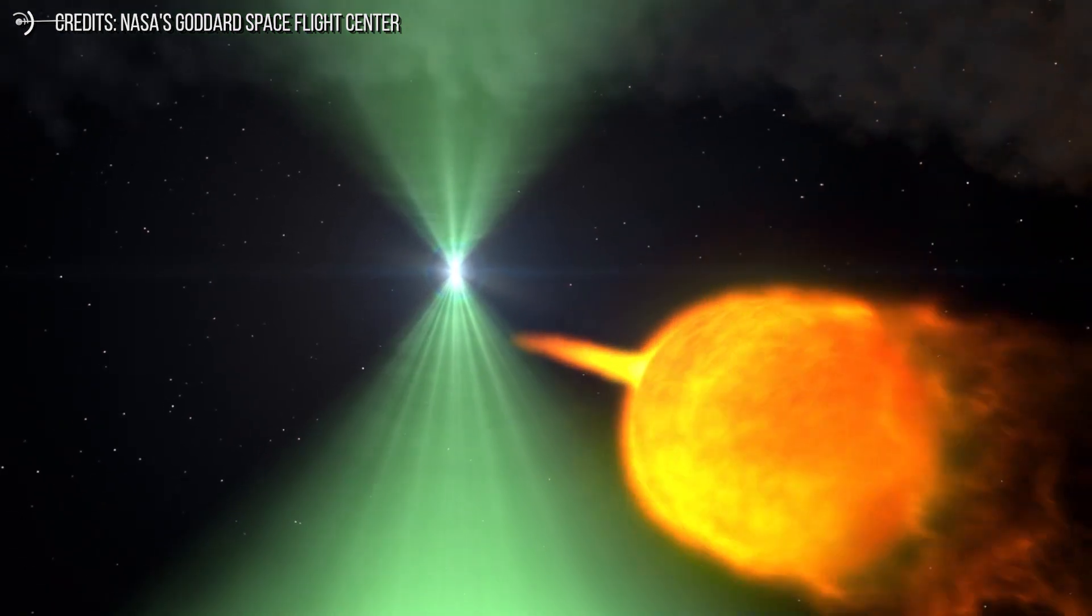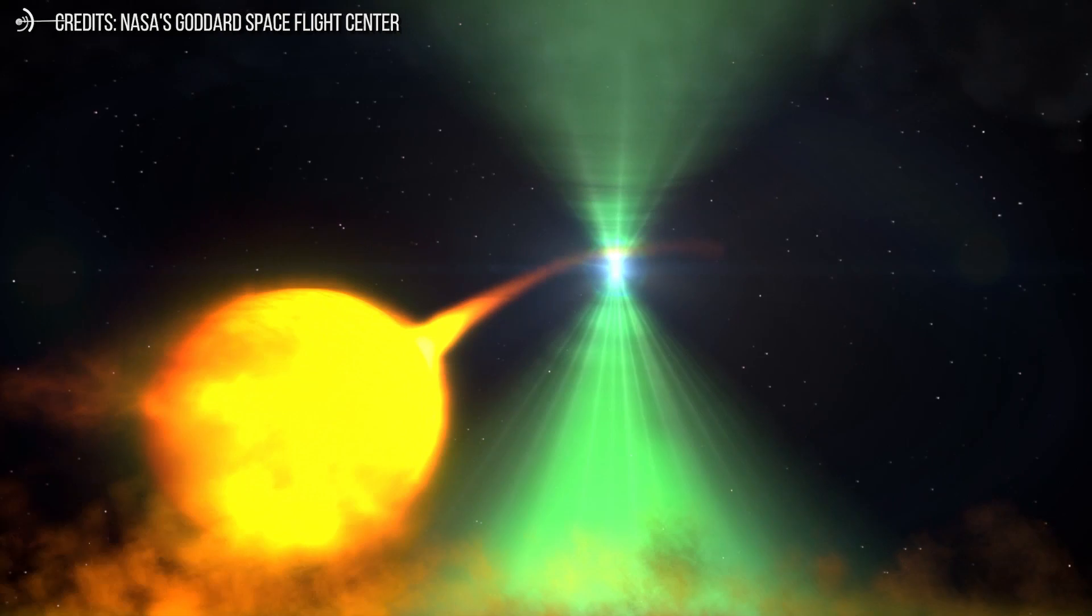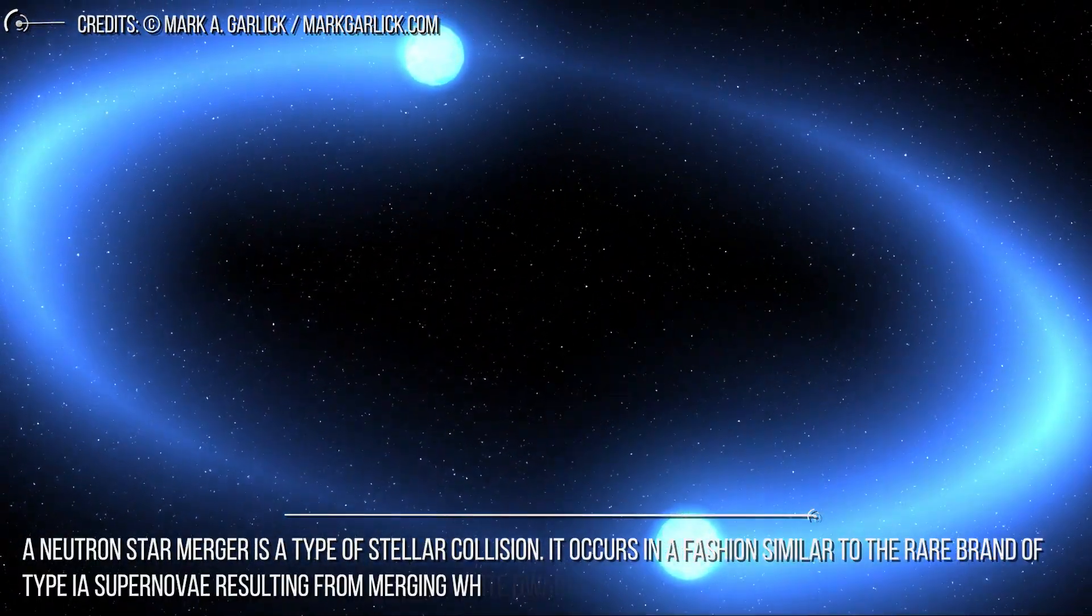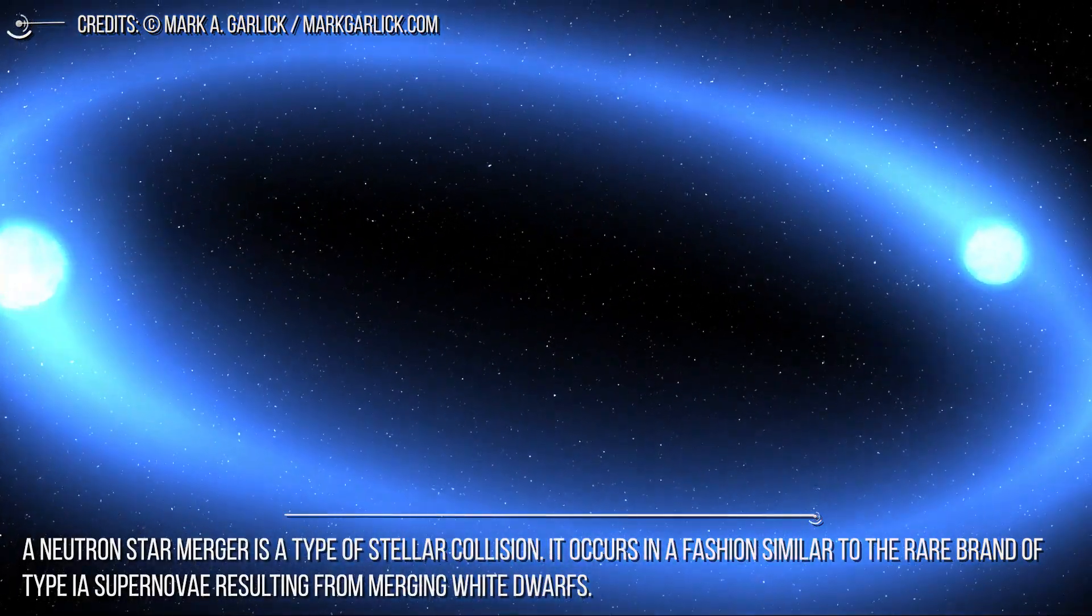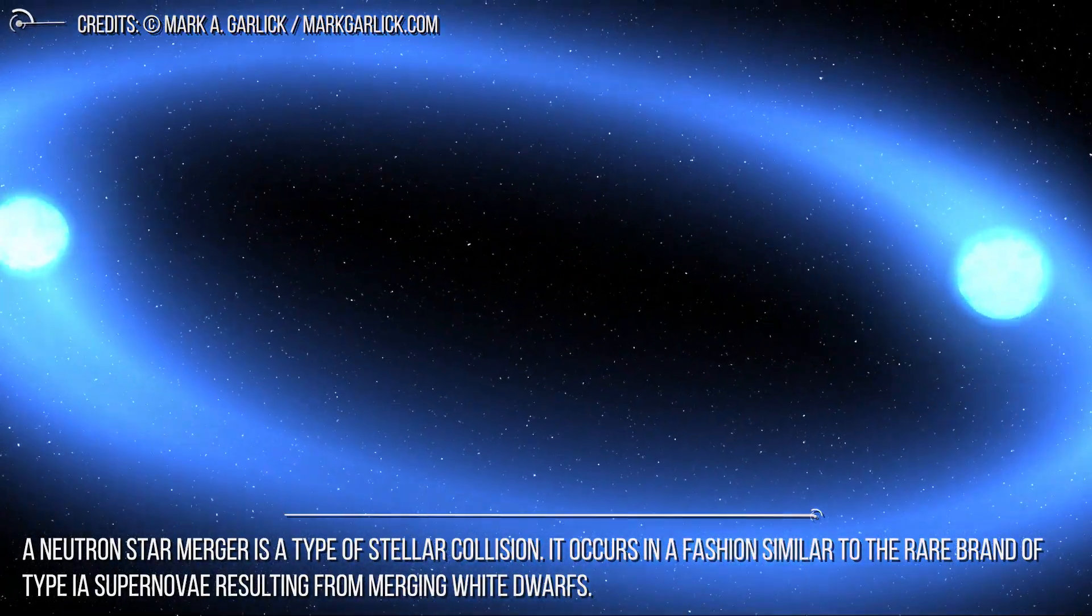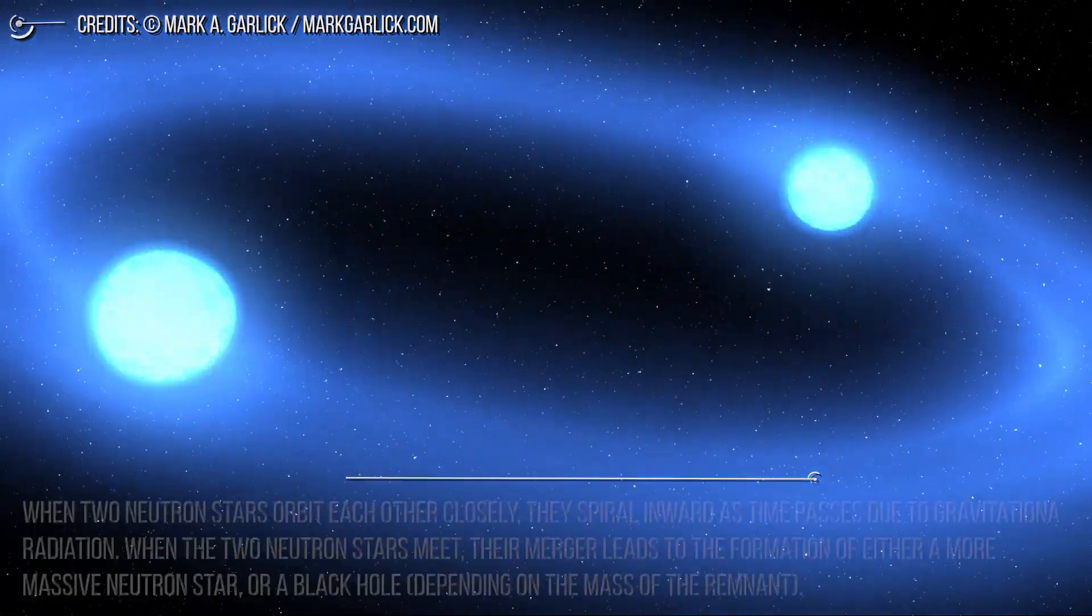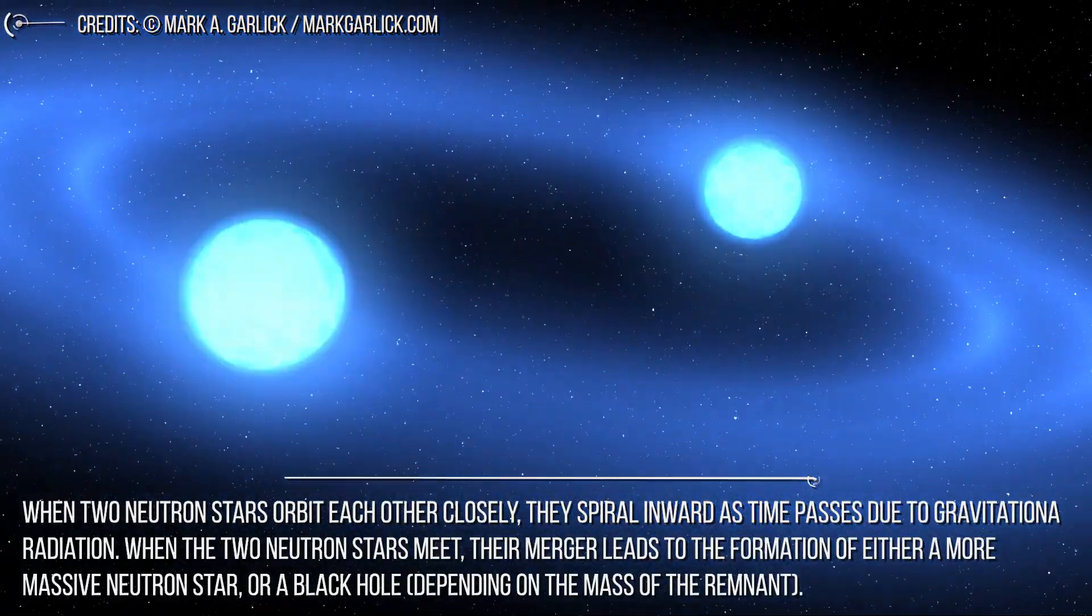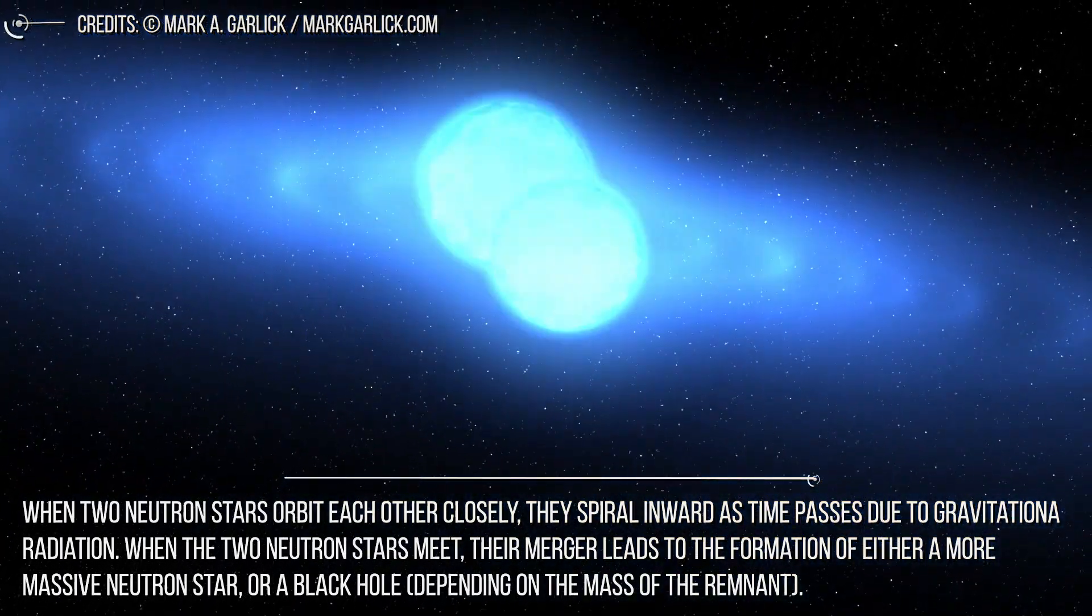We would like to end this video by recalling a beautiful thing that happens when two neutron stars merge. A neutron star merger is a type of stellar collision. It occurs in a fashion similar to the rare brand of type Ia supernovae resulting from merging white dwarfs. When two neutron stars orbit each other closely, they spiral inward as time passes due to gravitational radiation.